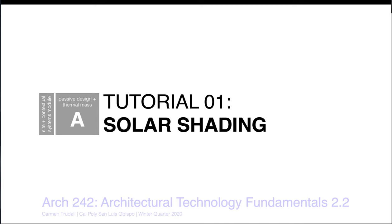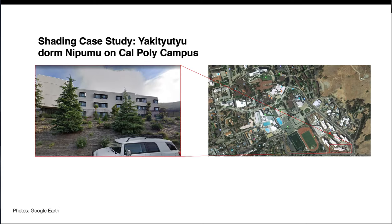Hello, my name is Cole Hendricks, and today I will be helping you design climate-specific solar shading devices for Architecture 242. We're going to look at a real-world example and understand how we can create an effective solar shading strategy for this building — specifically the Yakitutu Dorm Nipumu on the south side of the Cal Poly San Luis Obispo campus. This building is oriented with a long elevation facing south towards the equator, and we want to create a new solar shading system for that south elevation.